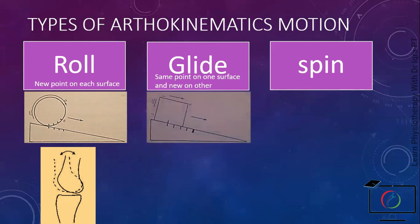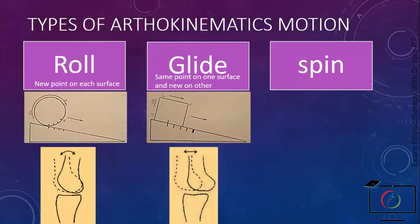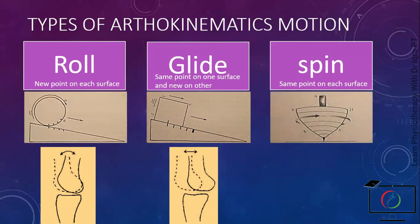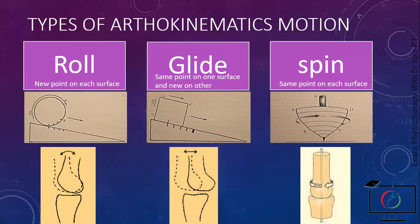For example, if you are moving a box on a floor, the same point on the box comes in contact with different points on the floor — the same happens in the glide of one bone on another. In spin movement, the same point on each surface remains in contact throughout the movement, like a top spinner spinning on a table. Whether roll, glide, or spin occurs at the joint surface depends on the shape of the bone. Most joint movements involve a combination of all three, since joint surfaces are not of a fixed shape.